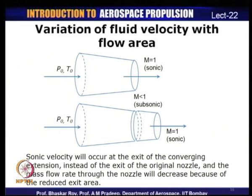As Mach number reaches 1, the mass flow is at its maximum — this is known as choking of a nozzle. If you force fluid through a nozzle until M = 1 at the exit, the mass flow rate has reached its maximum level. This is known as choking of the flow.